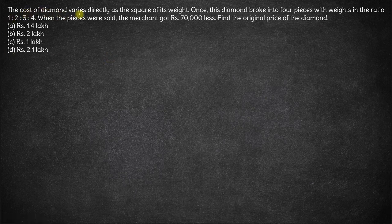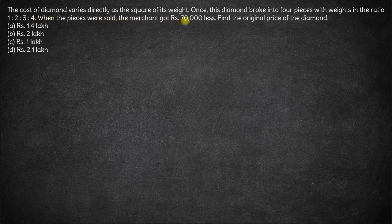The cost of a diamond varies directly as the square of its weight. A diamond broke into four pieces with weights in the ratio of 1:2:3:4. When the pieces were sold, the merchant got 70,000 less. Find the original price of the diamond.